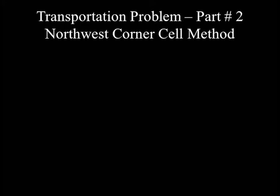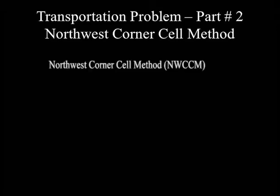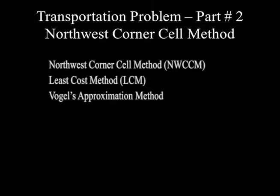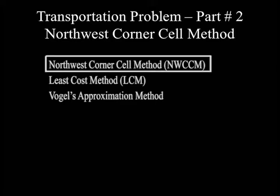This is part 2 of the transportation problem, which focuses on the Northwest Corner method. In part 1, we discussed three methods used for setting an initial feasible solution: the Northwest Corner method, the Least Cost method, and Vogel's Approximation method. In this part and the upcoming series, we will discuss each of these methods. Now let's direct the process to the Northwest Corner method.